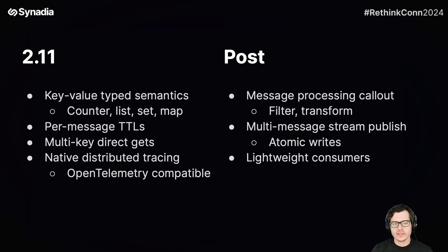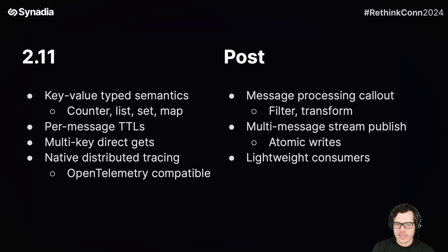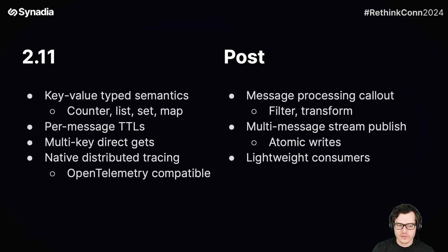Another commonly requested feature — and this is a subtle one, but when you need it, you need it — is a multi-key direct get from the KV bucket. There are of course APIs to get a single value associated with a key, but not necessarily multiple values across multiple keys. This new API is going to allow you to do a consistent read across multiple keys so that you can get the values at a given sequence number.